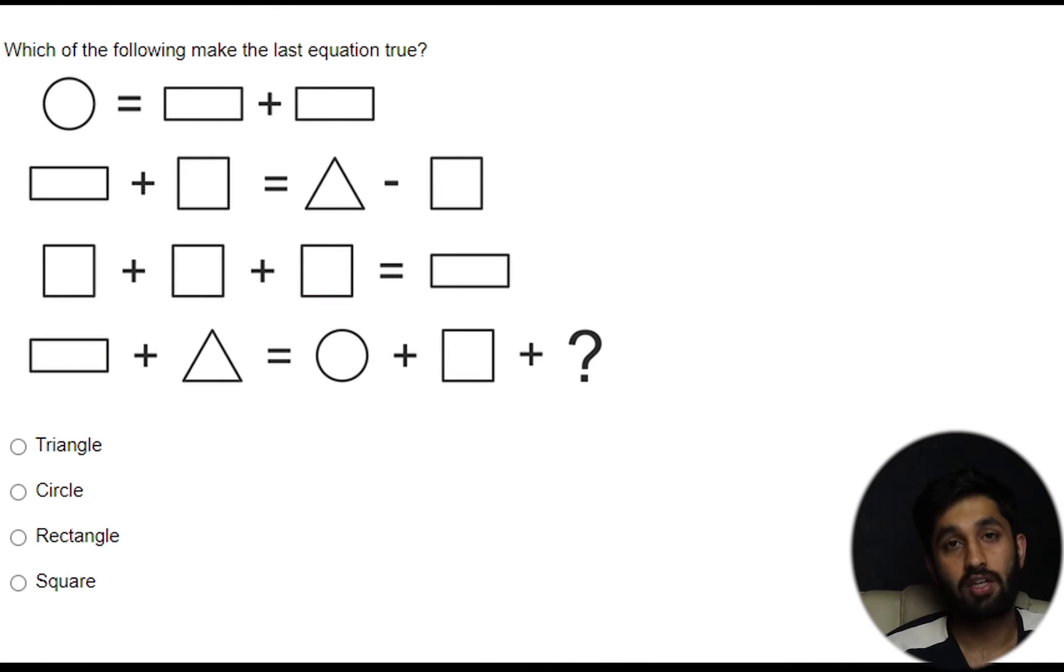Which of the following make the last equation true? Now is it a triangle, circle, rectangle or square? Now how do we know which one it is?